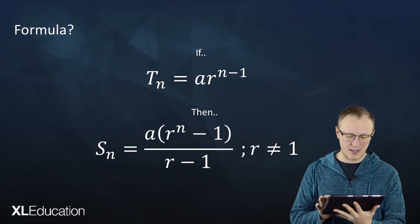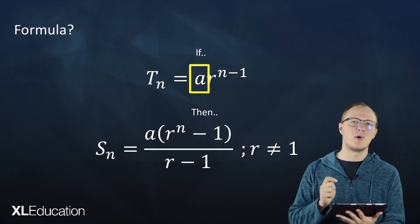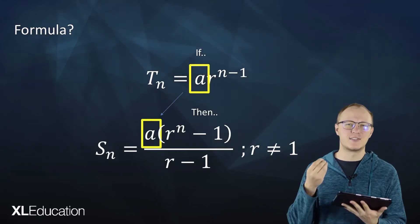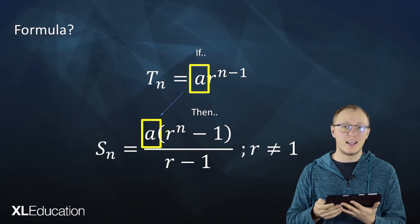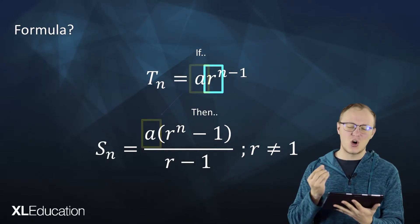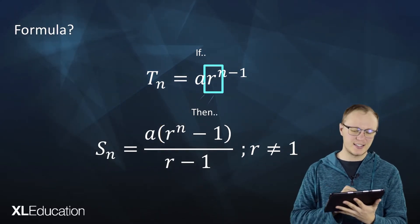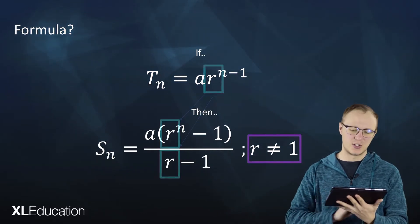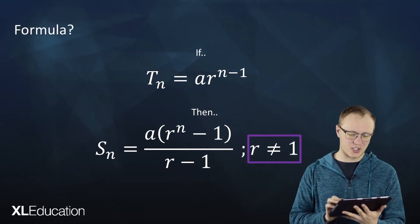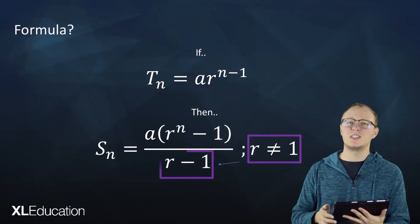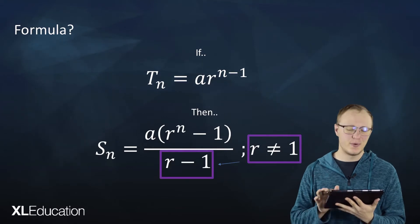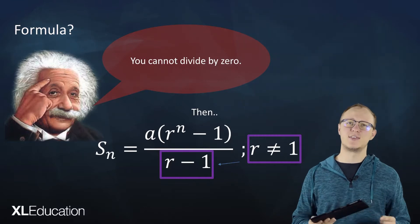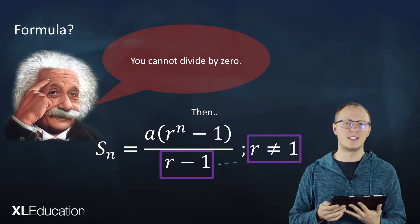Now what's important here is that the a, the first term of the sequence, is exactly the same a, the same number that you use in the series. And that r, the common ratio, is exactly the same r that you use in the formula for the series. We also see that r cannot equal 1, because we're dividing by r minus 1, and you cannot divide by zero.